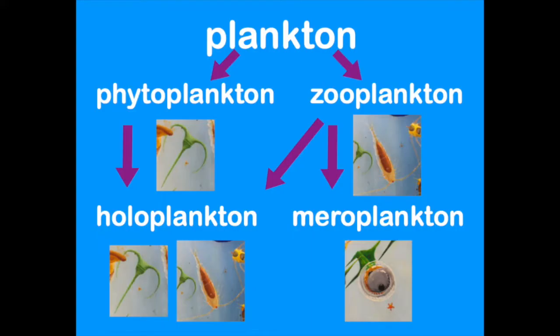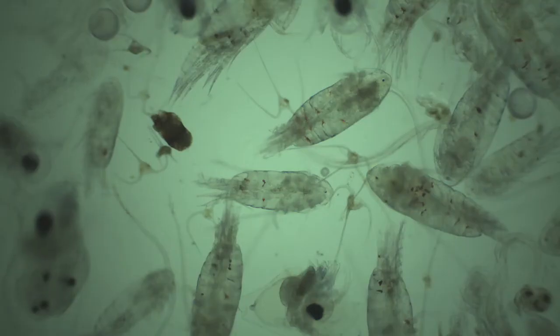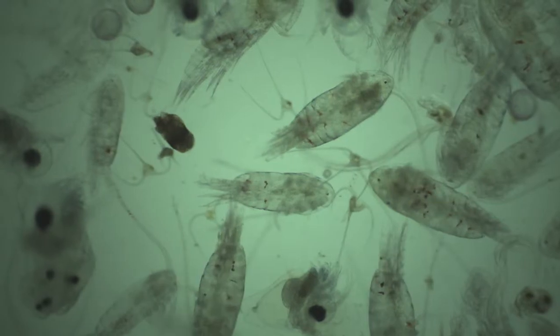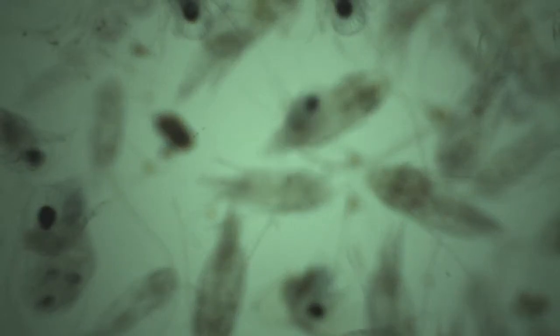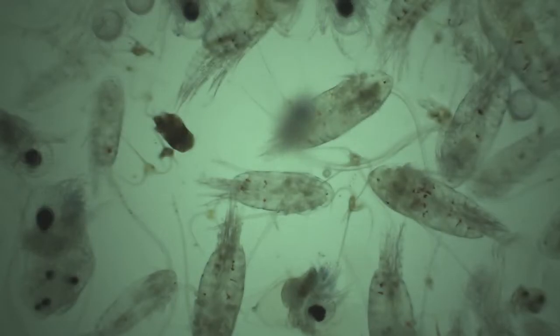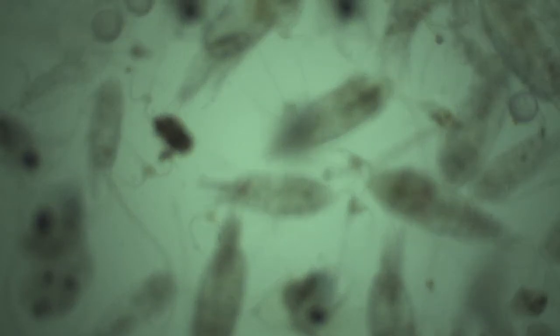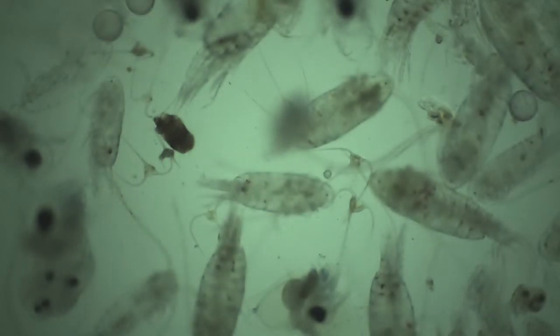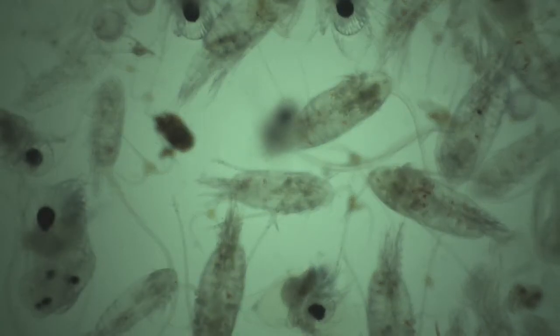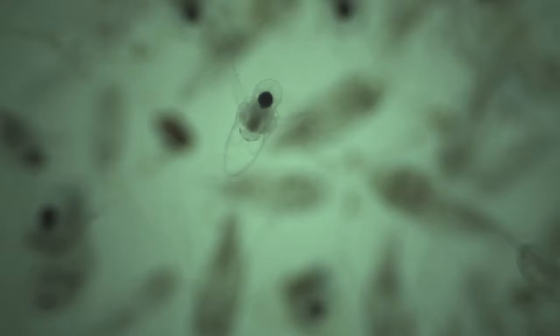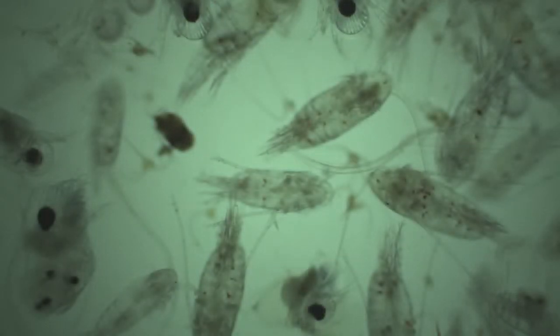Now that we've learned about all the types of plankton, let's take a look at a live plankton sample. As you observe the plankton, guess which categories the individual plankton belong to. Is it a zooplankton or a phytoplankton? A holoplankton or a meroplankton? Notice how the plankton are shaped and what kinds of adaptations they have. How are they moving? Do you see anything that you recognize from our lesson?